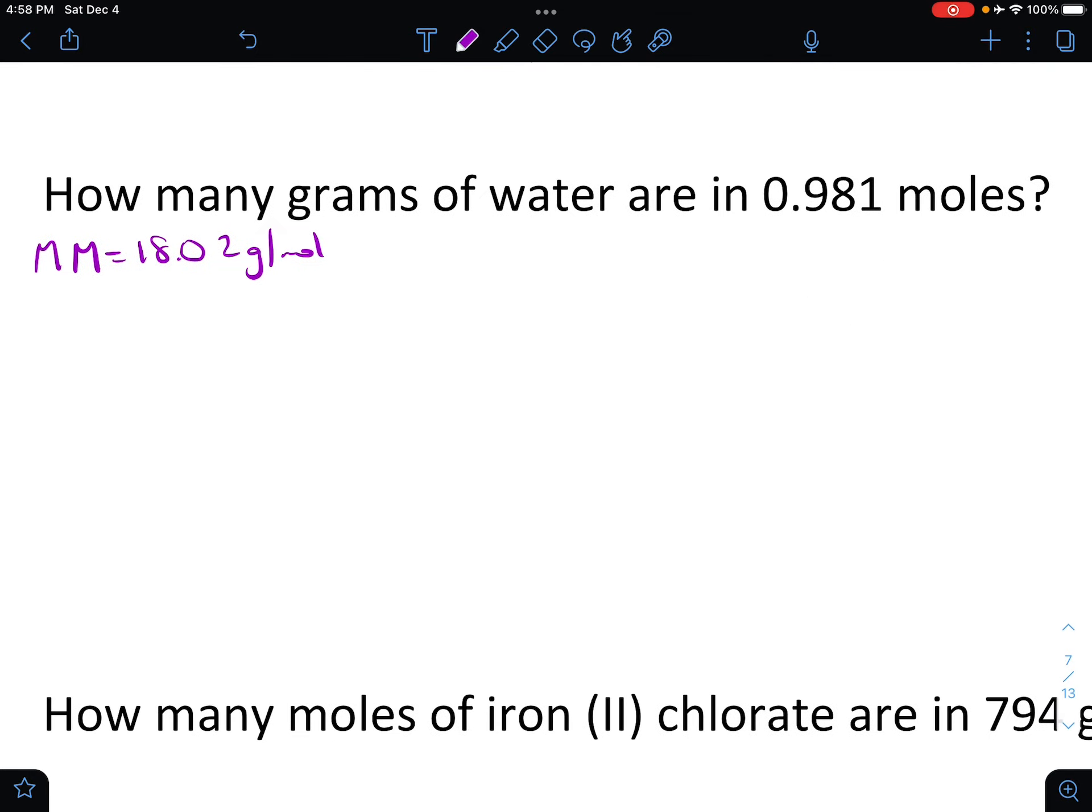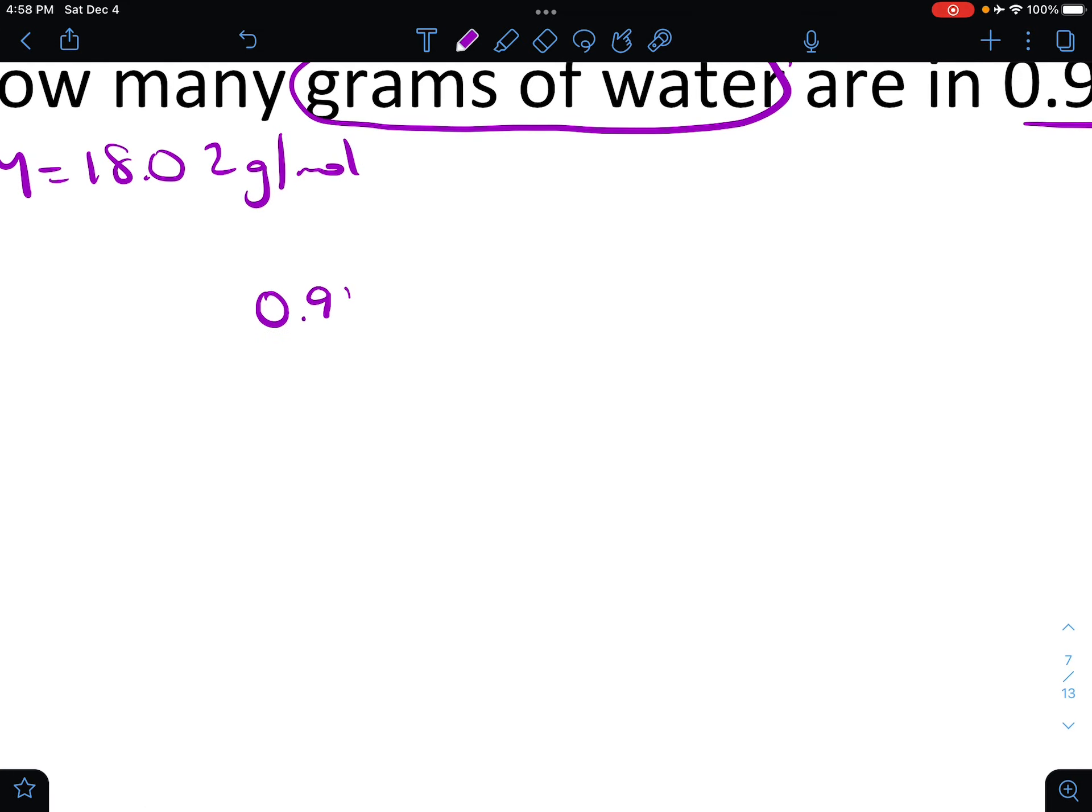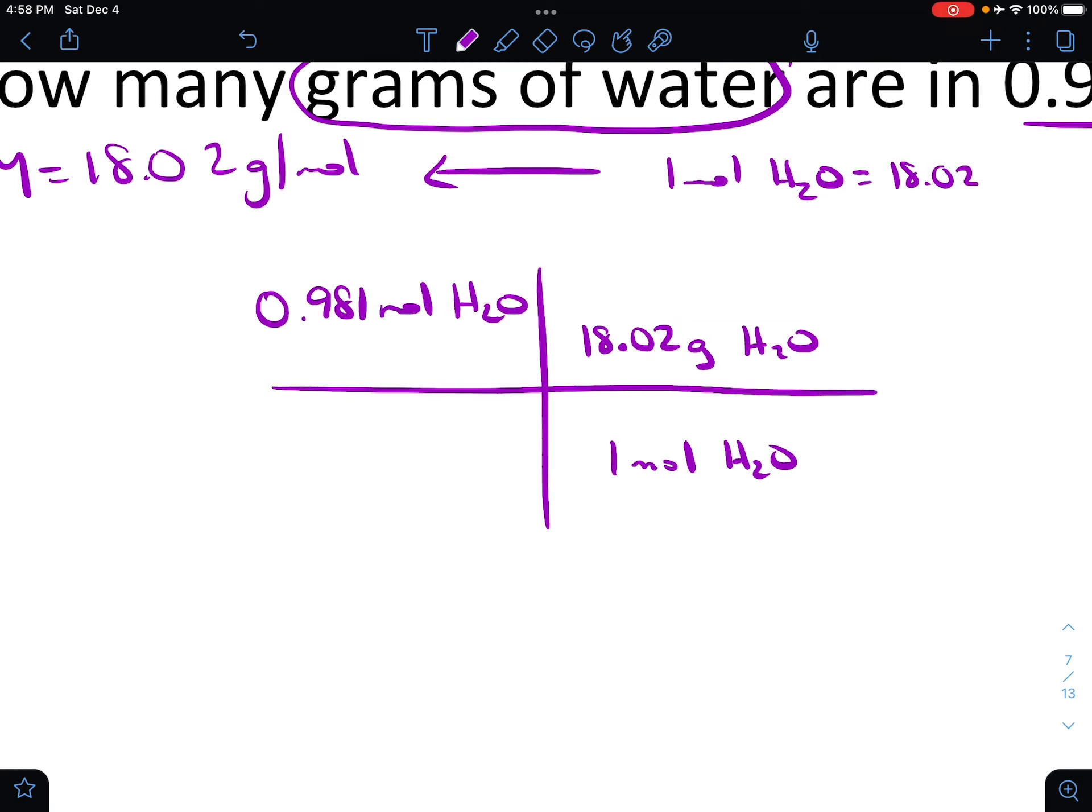Let's roll on and look at this next one. This time we're still looking for grams of water, and we have 0.981 moles. So we'll start with 0.981 and that's moles of H2O, and kind of just doing the same thing we just did. We know that one mole of H2O is equal to 18.02 grams of water.